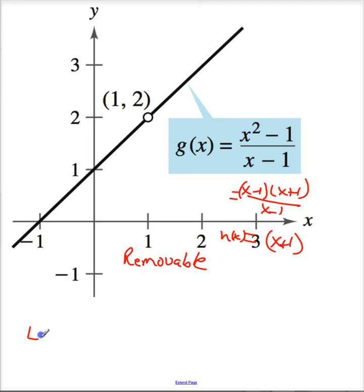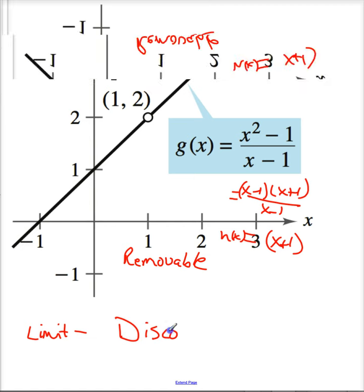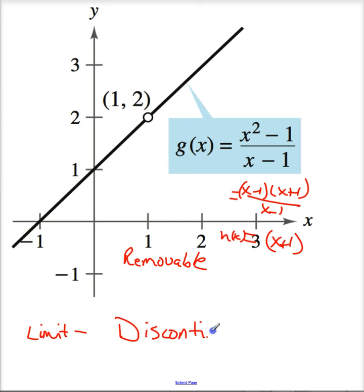So this one has a limit, but it is discontinuous at x equals 1. How would we write the interval where it's continuous? That would be from negative infinity to 1, union 1 to infinity.